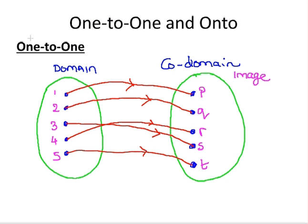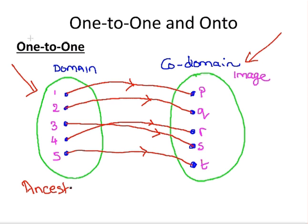Here's an arrow diagram. We have the domain on the left-hand side with elements one, two, three, four, and five. On the right-hand side, we have the co-domain with elements p, q, r, s, and t. There are arrows going from members of the domain to the co-domain. So the function of one is p — when you put input one, the output would be p. We would call the elements in the domain ancestors in relation to the elements in the co-domain.